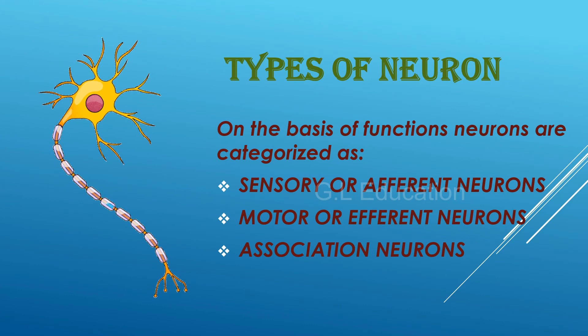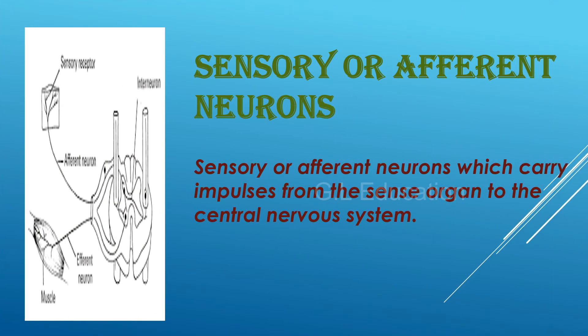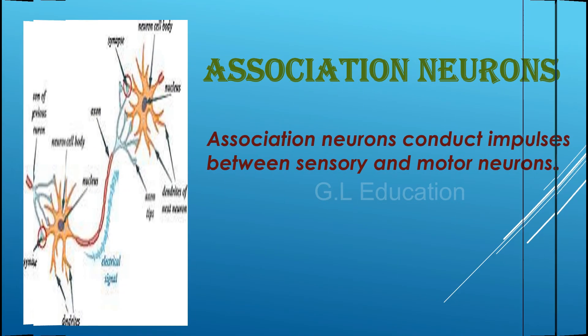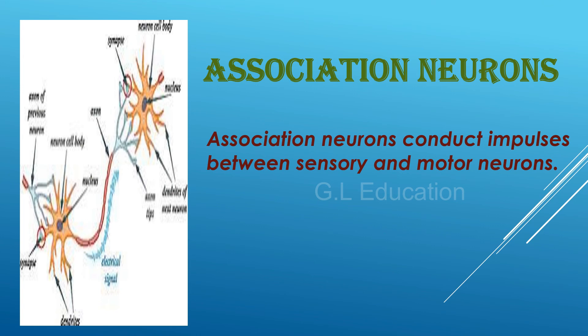On the basis of functions, neurons are categorized as sensory or afferent neurons, motor or efferent neurons, and association neurons. Sensory or afferent neurons carry impulses from the sense organs to the central nervous system. Motor or efferent neurons carry impulses to effector organs such as muscle fibers or glands. Association neurons conduct impulses between sensory and motor neurons.